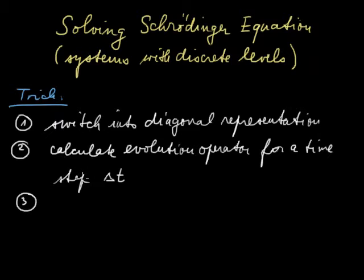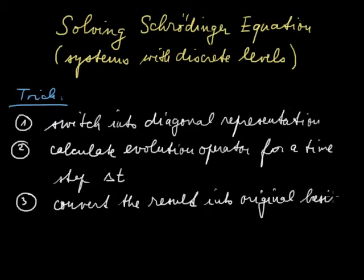The third step, then, will be converting this result back to our original basis. Convert the result into original basis. This we will do in order to get the result in a form that we expected. If we want to look at things from the point of view of individual chlorophylls, then we have to look at our results in the same basis, even though we calculate it in a basis which will diagonalize such a Hamiltonian.